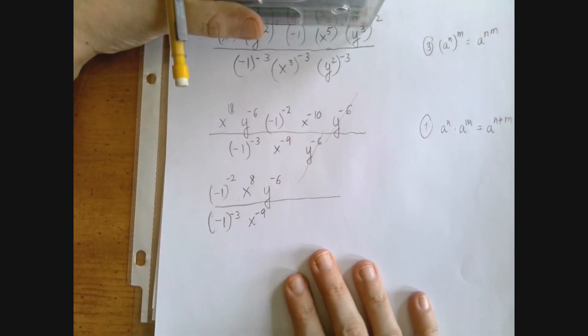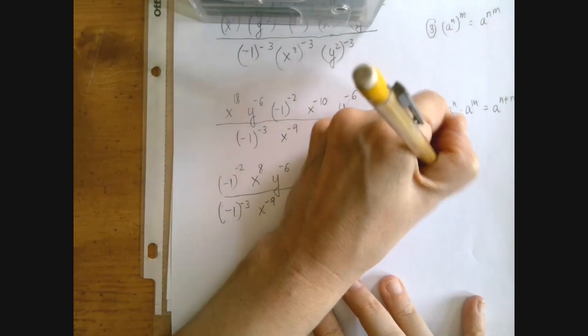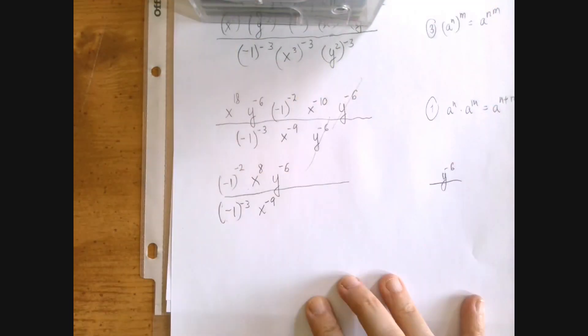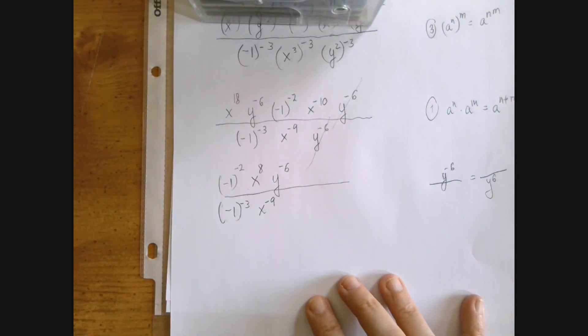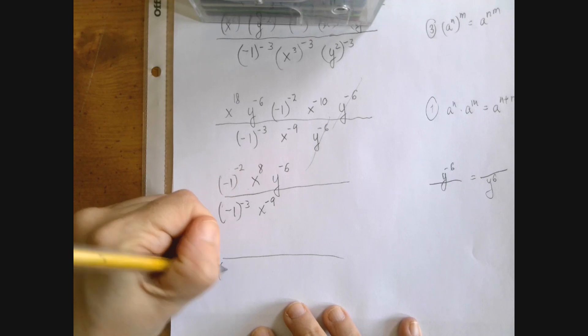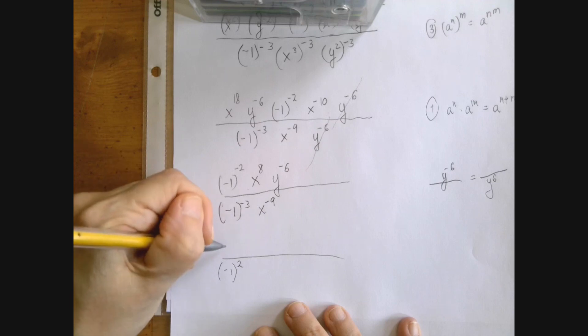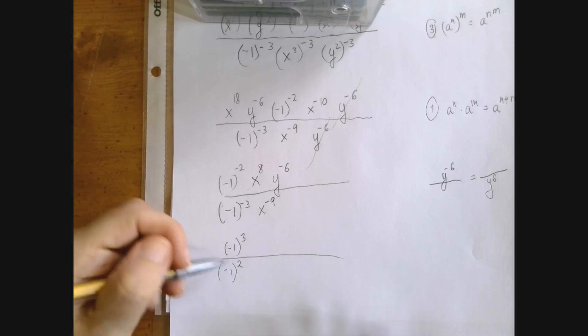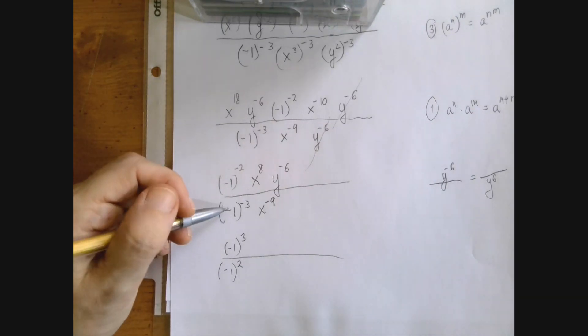Unless there is some addition and subtraction, which is not the case, we can rewrite y to the negative 6 in the numerator as y to the positive 6 in the denominator and vice versa. So whoever has a negative exponent will be moved. Negative 1 to the negative 2 will be negative 1 squared in the denominator and negative 1 to the negative 3 in the denominator will become negative 1 to the plus 3 in the numerator. Notice that we are not dealing with the negative signs on the baseline. It's just in the exponents.